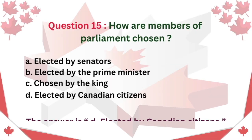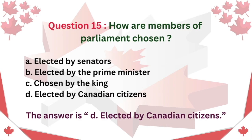Question 15: How are members of parliament chosen? A. Elected by Senators. B. Elected by the Prime Minister. C. Chosen by the King. D. Elected by Canadian Citizens. The answer is D: Elected by Canadian Citizens.